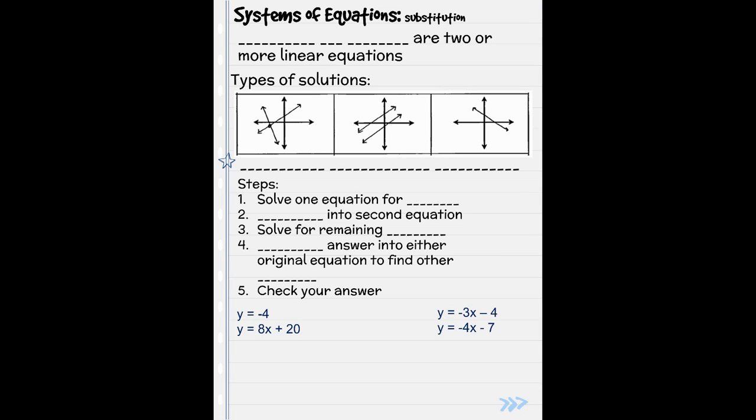Here are the other examples if you need them for your notes. So we are doing systems of equations by substitution. We are solving one equation for the variable, substituting it into the second equation, solving for that variable, and then substituting that answer into either one of the original equations to find the other variable, and then finally we are checking our answer.